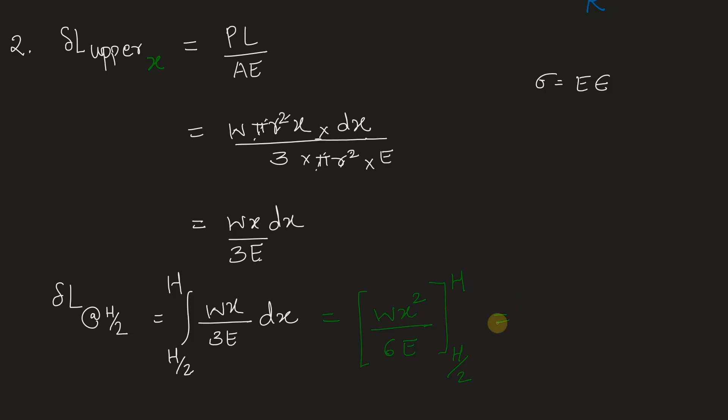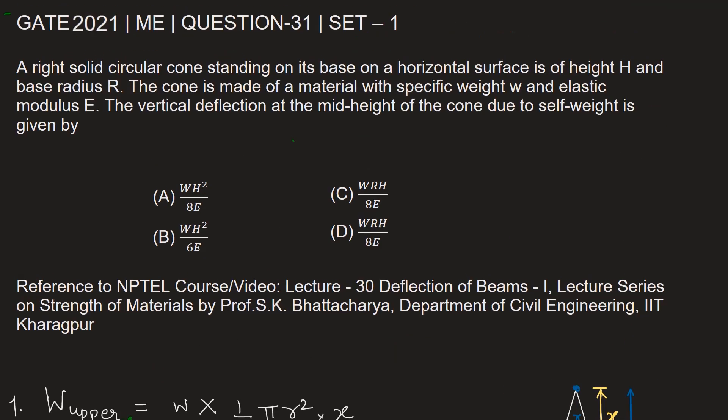After substituting the limits, we get W H² / 8E. So this is nothing but the final deflection at mid-height of the cone. So our answer here is option A.